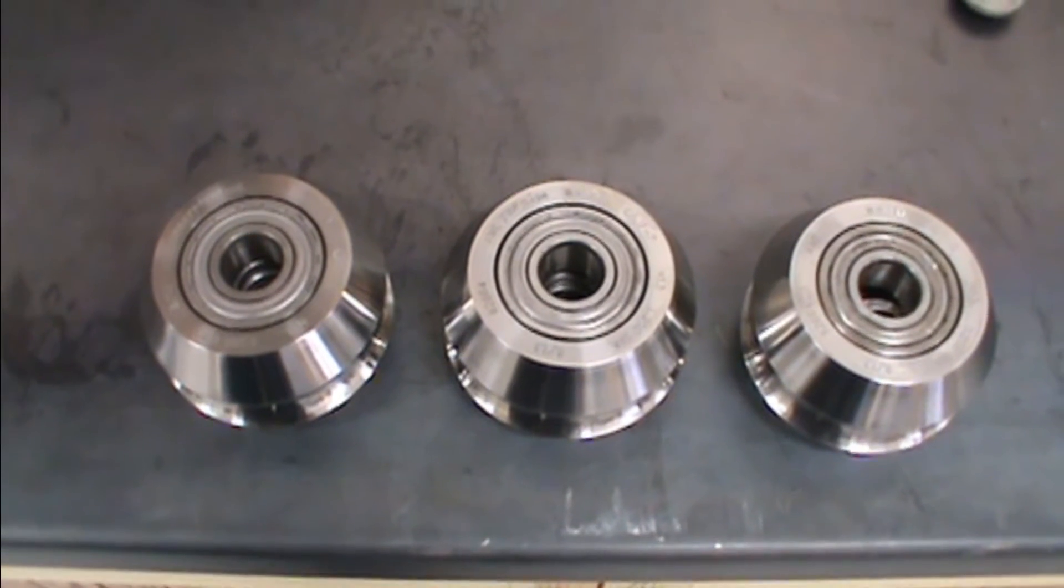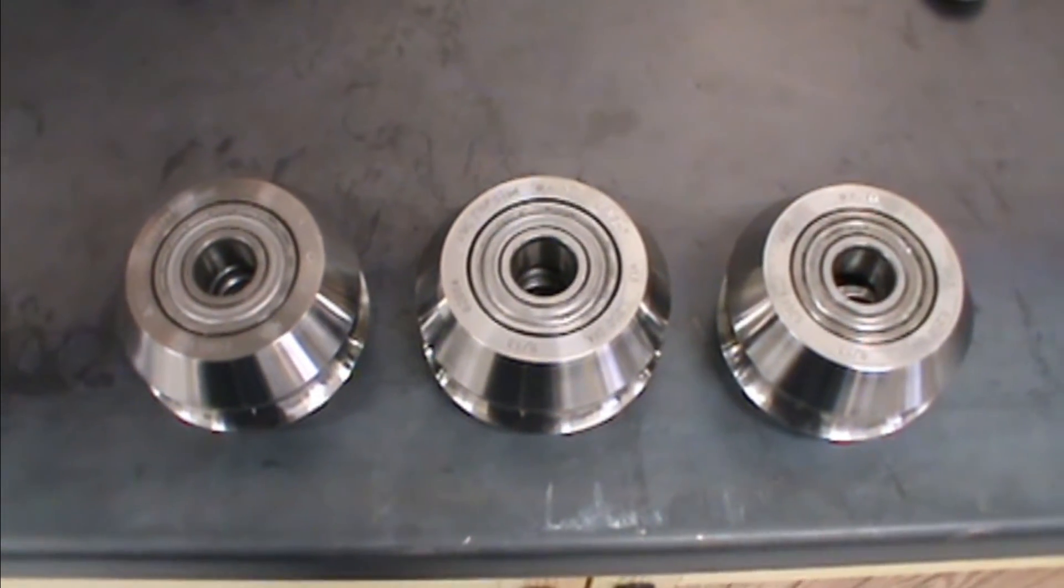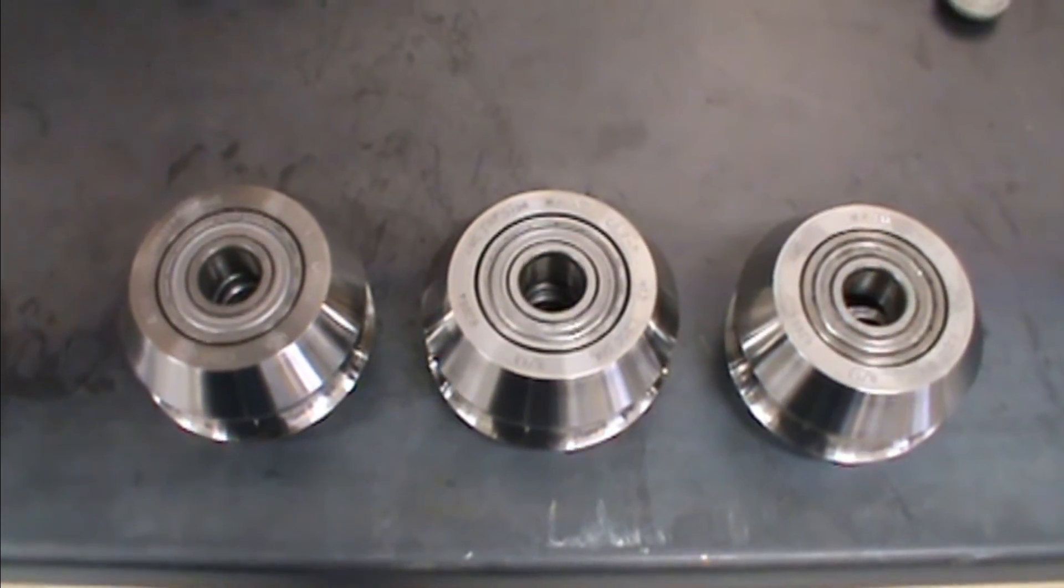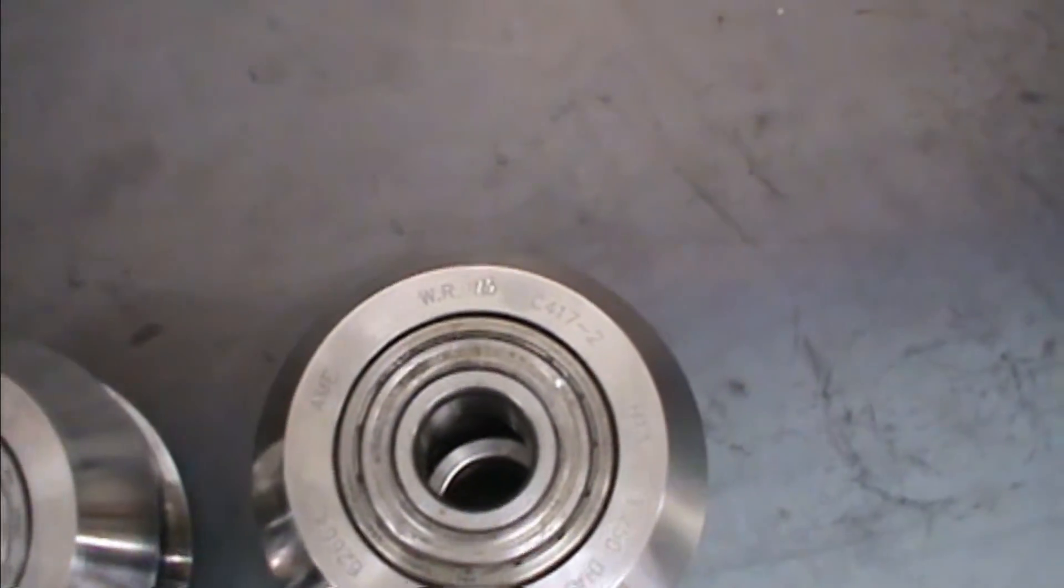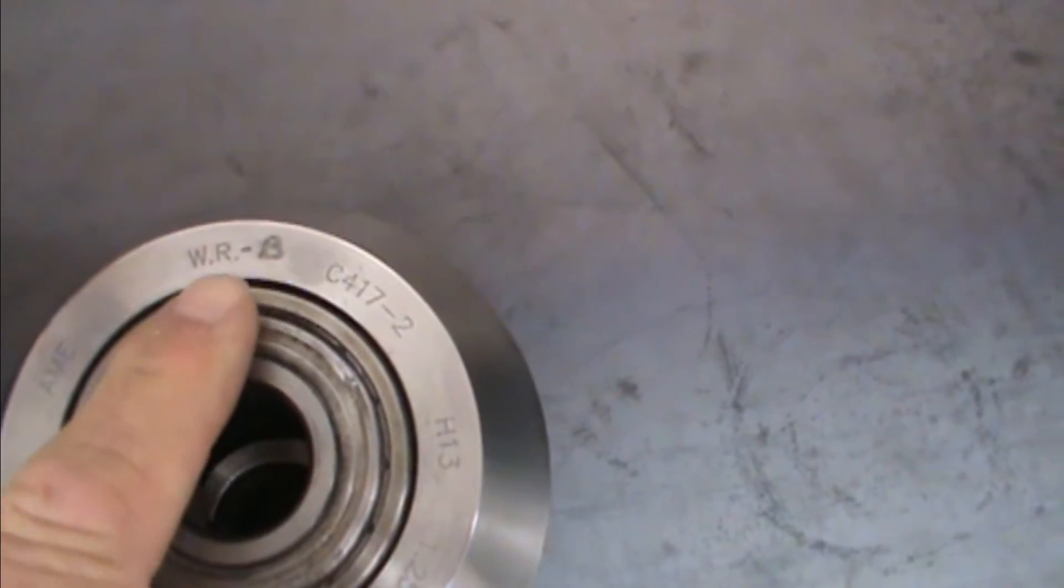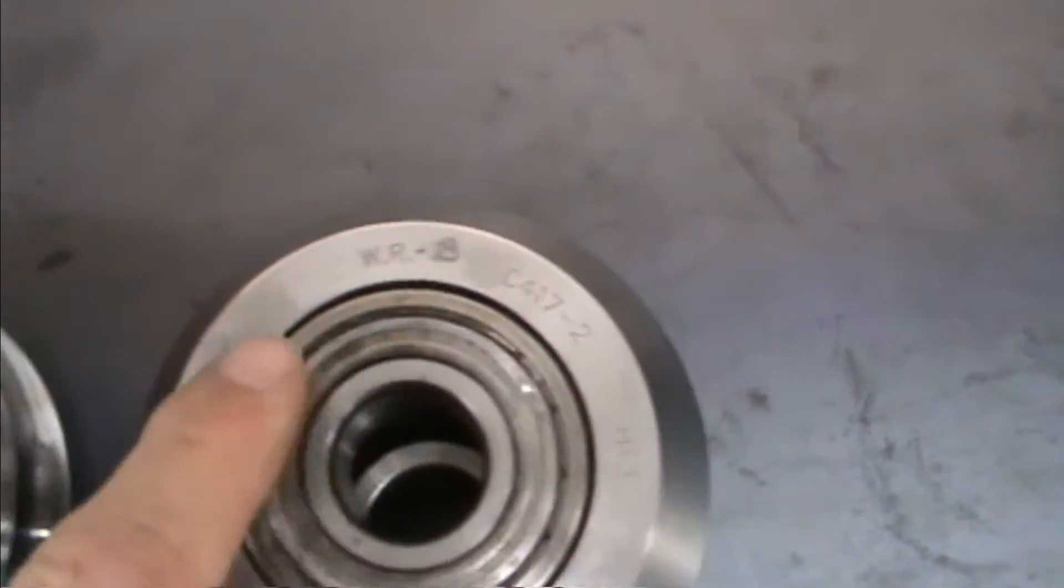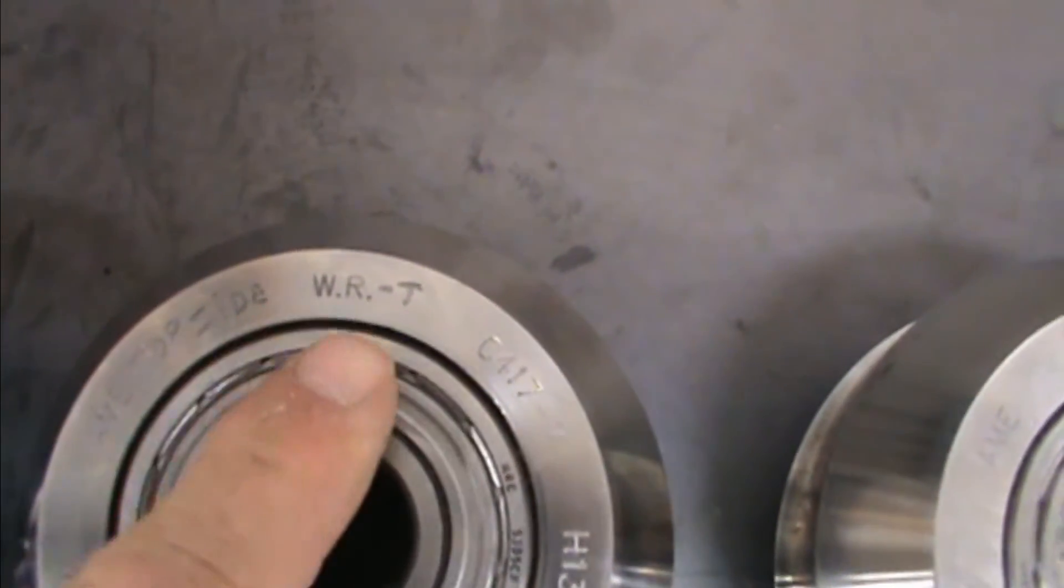Once the bearings are assembled in the weld rolls, make sure that we put the proper weld roll in the proper location. On a three-roll weld box, for example, the rolls will be designated as far as weld roll bottom, weld roll top.